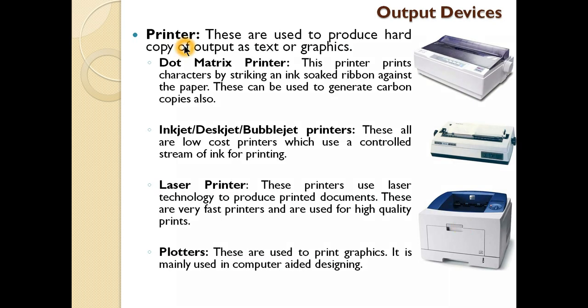Next is the printer. If I have typed a letter on the computer and want a printout on paper, I need a printer to print it — we get the output from the printer, so it is also an output device. There are many types of printers. Dot matrix printers print characters by striking on an ink-soaked ribbon — a ring with characters embossed strikes the ribbon and characters are printed on paper. Next is inkjet, deskjet, or bubble jet printer — they are lower-cost printers that use a controlled stream of ink for printing, like a spray.